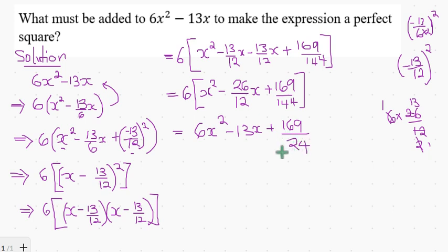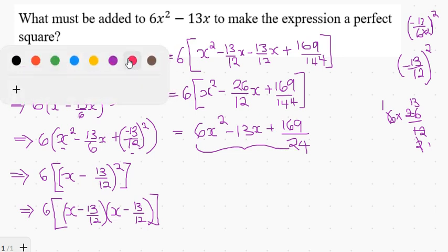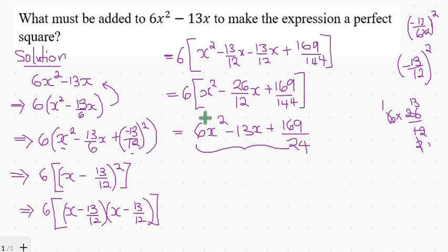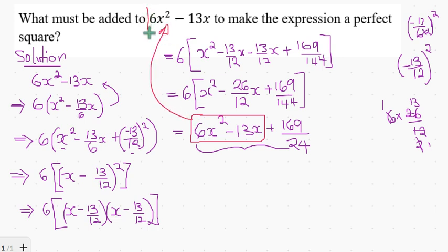We arrive at a quadratic expression whose first two terms — 6x squared minus 13x — are identical to the first two terms of the original expression given. And I believe you can see the answer already: the third term, 169 over 24, is what we needed.